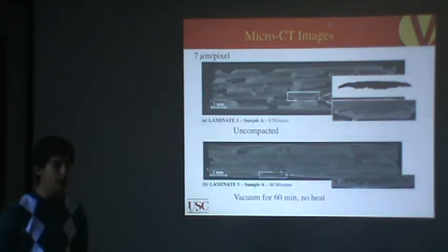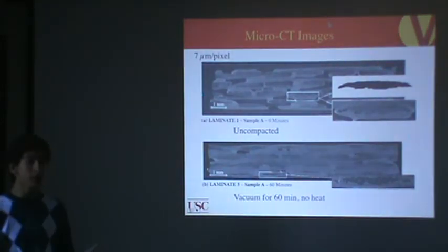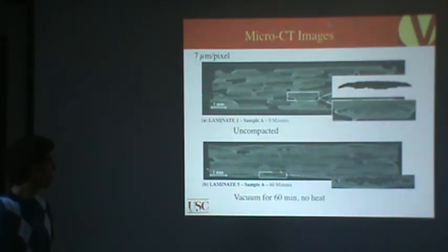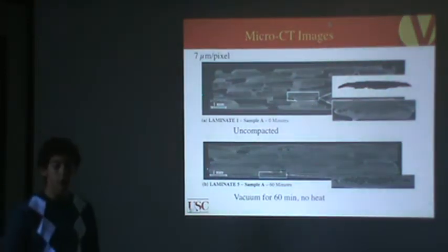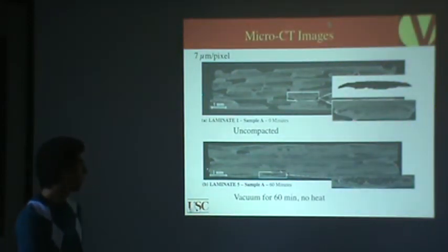Here's laminate five, which experienced vacuum for one hour, but had no heat applied. And already, you can see a big difference. A lot of the largest voids are gone. Obviously, there are still some large ones here and there, but most of the largest voids are gone. The tows are still completely dry on the inside, pretty much, as you can see from this inset.